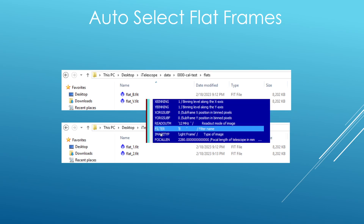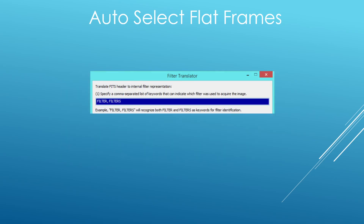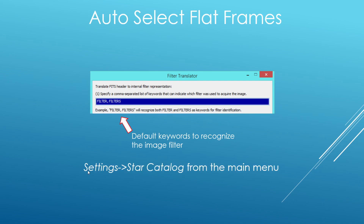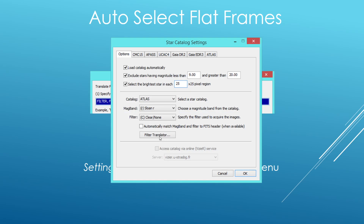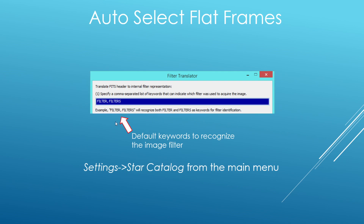The header will contain a filter keyword that has the actual filter value present. Now you might say, maybe my images have a non-standard keyword for the filter indication. I thought of that too — if you go to the filter translator module, you can specify your own keyword that indicates the filter. You can access that by going to Settings > Star Catalog from the main menu. There's a button on that window that opens the filter translator where you can add your own custom keyword. There's a lot of customization you can do, and this is one of those ways to do that.